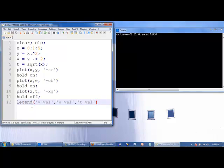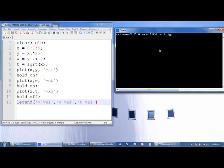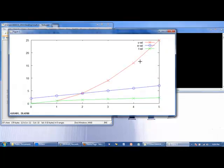And we can add a legend. So the text yval will be associated with the first item that's been plotted, wval will be associated with the second item that is plotted, and tval will be associated with the third item that is plotted. So we see we get a red line for y, a blue line for w, and a green line for t.